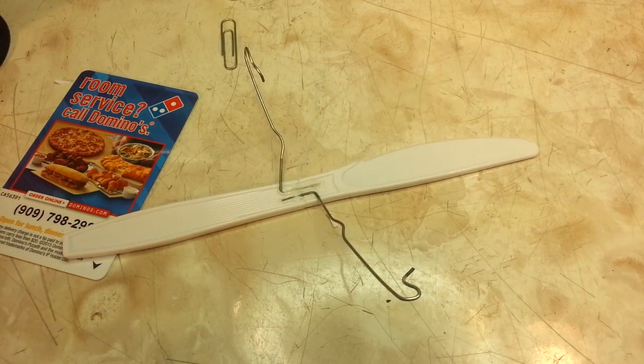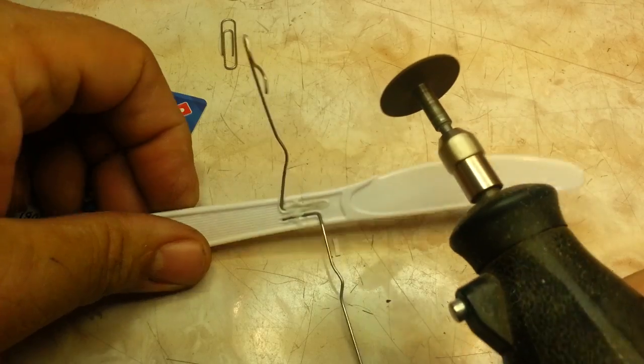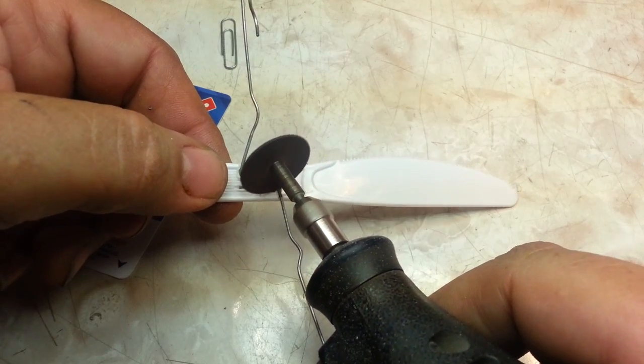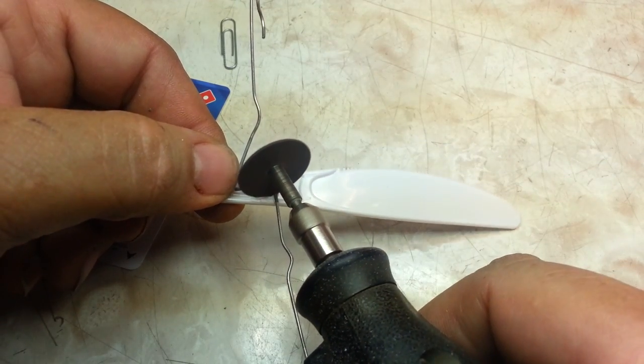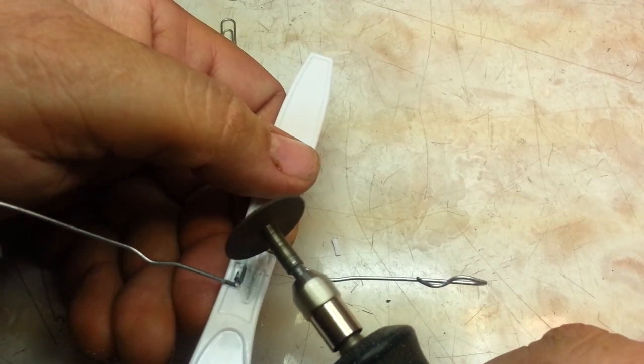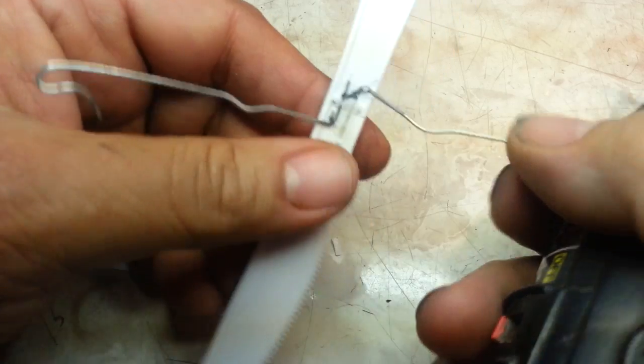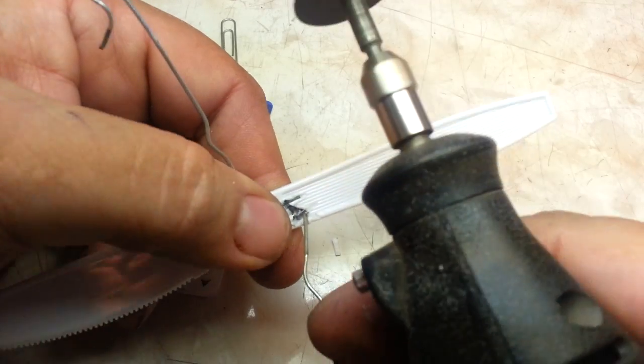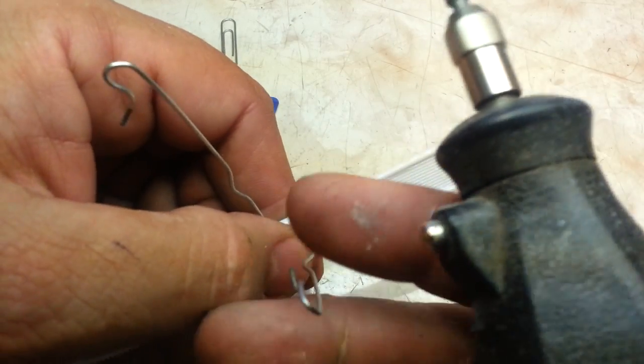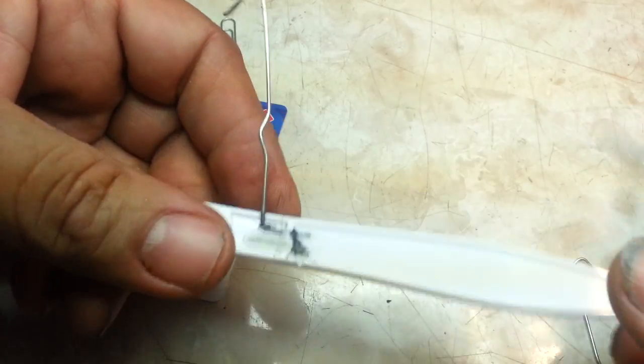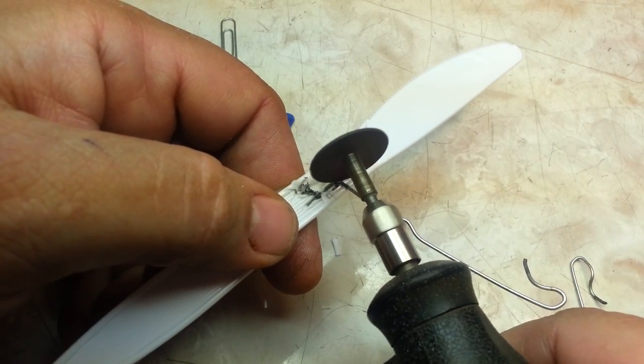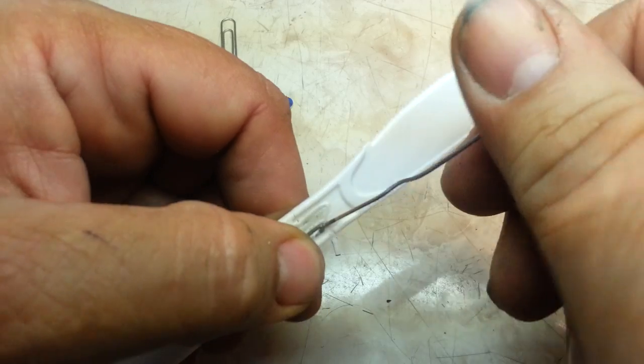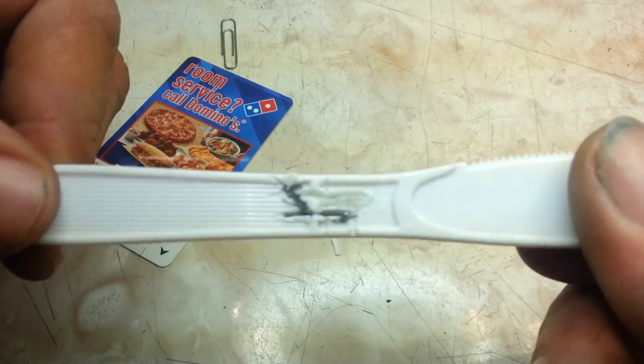So let's take the Dremel tool and cut these little ends off. Doesn't take much to get this to come off. It's strong enough so I'm not going to risk popping that out because it's in there pretty good. Okay. There we go. So those are broken off. There is the repair.